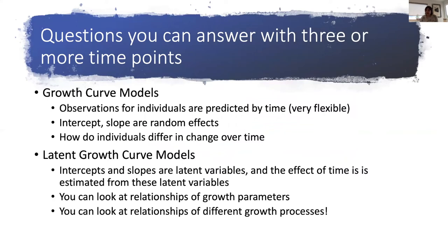With growth curve models—the multi-level models—you can look at whether observations for individuals are predicted by time, and there's great flexibility in how time is expressed. It doesn't have to be evenly spaced; it could be ages by days. You can model the intercept and slope as random effects and examine how individuals differ in their change over time. With latent growth curve models, the intercepts and slopes are latent variables and the effect of time is estimated from these latent variables, allowing you to look at the relationships of different growth processes.